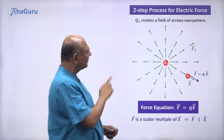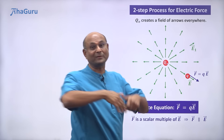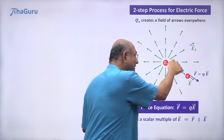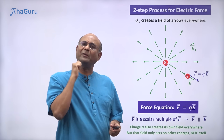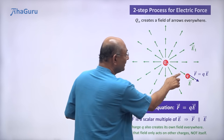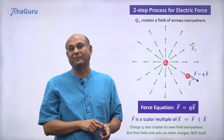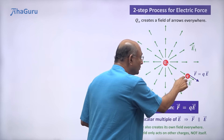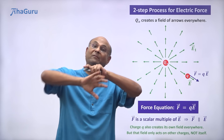Now, you can think about this: Q naught is putting all these arrows, and these arrows are acting on small Q. But small Q is also a charge — shouldn't it also put arrows? Of course it will. So small Q will also put a lot of arrows. But won't that also start acting on Q? No. Charge Q also creates its own field everywhere, but the field created by small Q will act on all other charges — on Q naught, on Q2, Q3 — but it will not act on itself. Q naught will act on Q, but Q naught's field will not act on Q naught. Similarly, Q's field will act on Q naught, but Q's field will not act on Q. The field produced by a charge will act on everybody else, not itself.